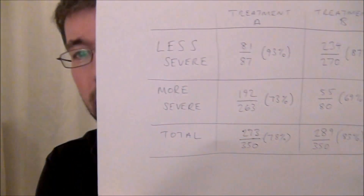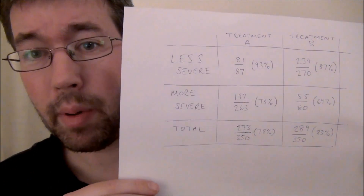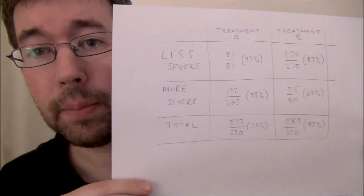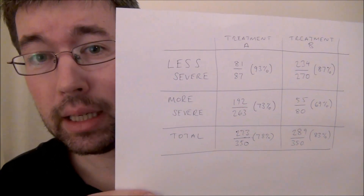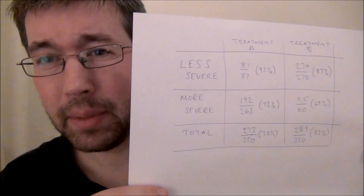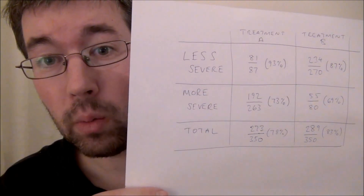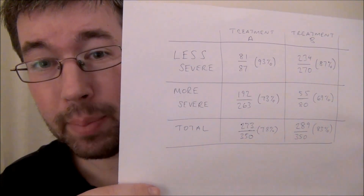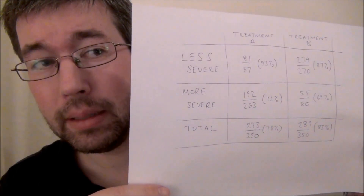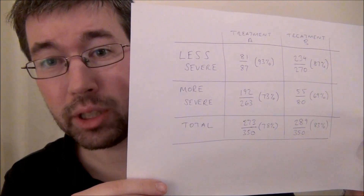Something quite odd happens when we look at the breakdown between the more severe and the less severe conditions, because these are the actual results when we break them down. For the less severe cases, treatment A cured 93%, compared to only 87% for treatment B — so treatment A has won for the less severe cases. For the more severe cases, treatment A cured 73%, compared to only 69% for treatment B, so treatment A has won for the more severe cases as well. We've got treatment A winning for both the less severe and the more severe conditions, and yet when we look at the total, treatment B appears to have won.